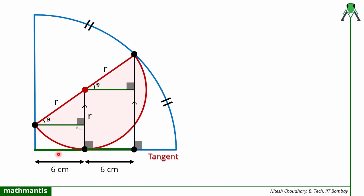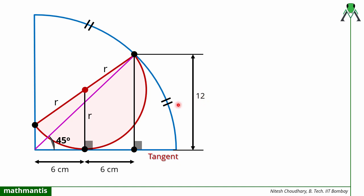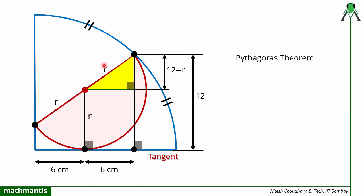Now in the next step I will use the 45-degree angle. This total length is 12 centimeters. In this right triangle, using trigonometry: the perpendicular upon the base equals tan 45, so this length must also be 12 centimeters, because 12 upon 12 represents tan theta equal to 1, which represents 45 degrees. Now I will use the Pythagorean theorem in this triangle. This length is r, this vertical length is also r, and this total length is 12, so the remaining length is 12 minus r.